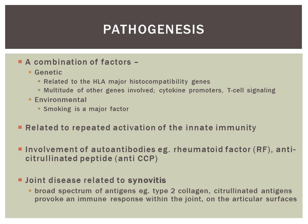As we already know, rheumatoid arthritis is an autoimmune disease and is therefore mediated by autoantibodies — for example, rheumatoid factor and anti-citrullinated peptide, or anti-CCP. These autoantibodies are triggered via the antigens found on type 2 collagen, which is the basis of hyaline cartilage found within the joints.